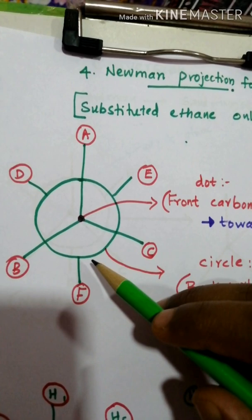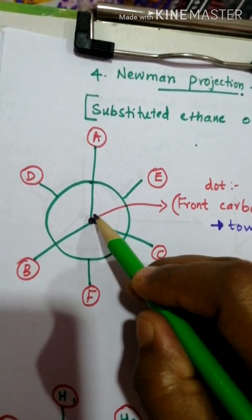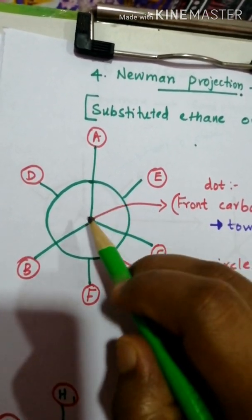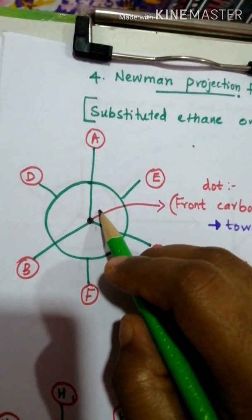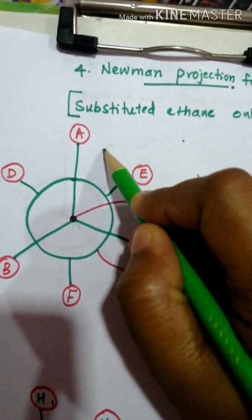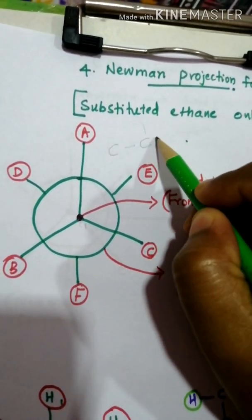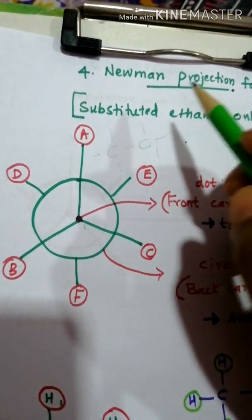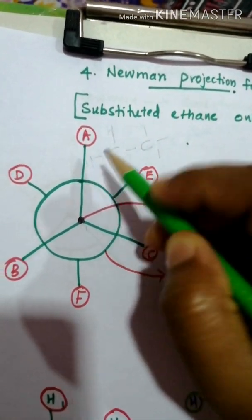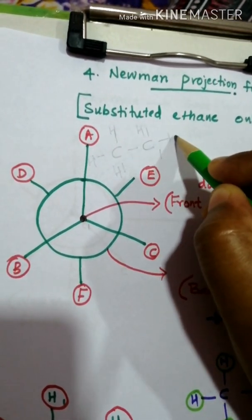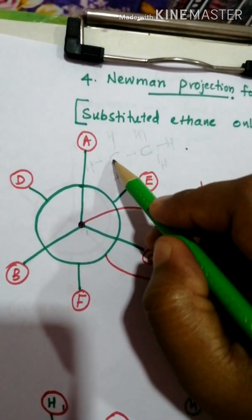In the Newman projection, a carbon is attached with four groups or four bonds. Suppose this is C1 — it is attached with groups A, B, C, and a fourth bond connecting to the next carbon. We are considering ethane, which has a C-C backbone attached with other groups.